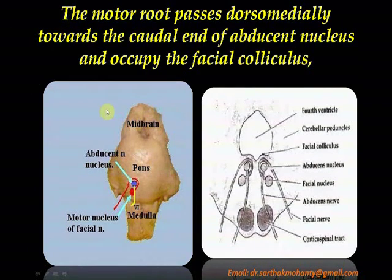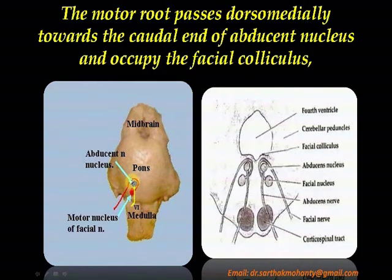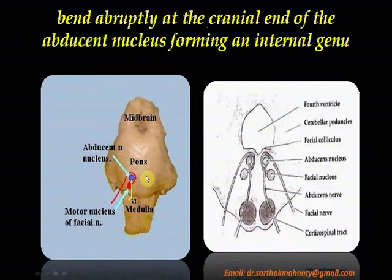Now coming to the course. The motor nucleus of the facial nerve, present in the pons, gives rise to the motor root which passes dorsomedially towards the caudal end of the abducens nucleus and occupies the facial colliculus. It then bends abruptly at the cranial end of the abducens nucleus, forming an internal genu.